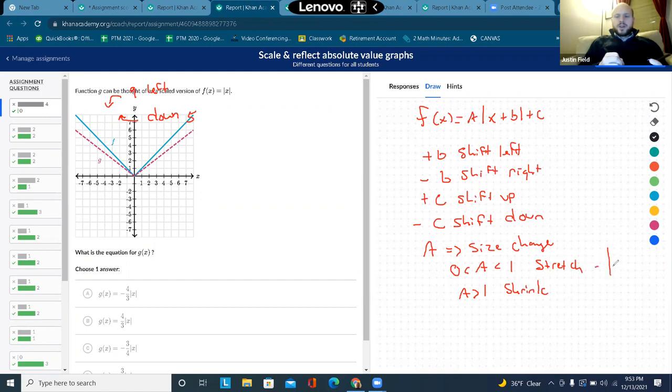So stretch means the opening of the graph is wider. Shrink means it's more narrow than the basic function. Everything is compared to that blue basic function's shape and position. So we can see this is wider than the basic function, which means it's a stretch. So we're looking for a number between 0 and 1.